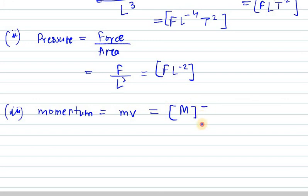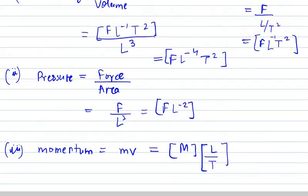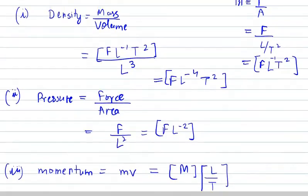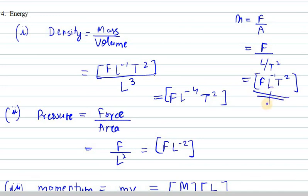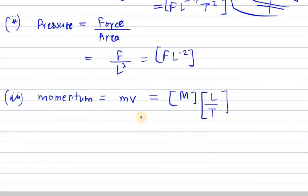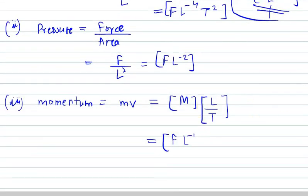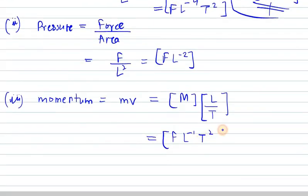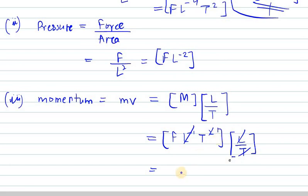Velocity is displacement over time, so L over T. We need to remember that force, length, and time are our fundamental quantities. Mass has already been written as FL⁻¹T². Multiplying by velocity L over T: the L terms cancel (one negative, one positive) and one T cancels, leaving us with FT.